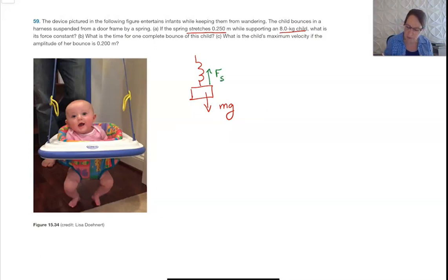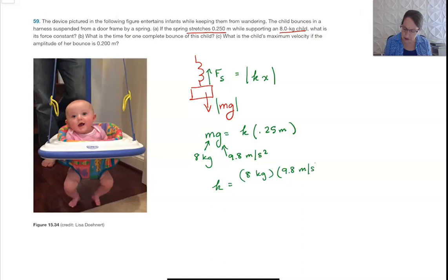So you would say you have kx would be the spring force that would be up and mg would be down. That would be the magnitude of it, and so we could say that mg is equal to k times the displacement. So the displacement from equilibrium, that would be 0.25 meters, and we can find the spring constant of this spring. So the mass is 8 kilograms, g of course is 9.8 meters per second squared, and so we get k is 8 kilograms times 9.8 meters per second squared all over 0.25 meters. The meters cancel and I get 314 kilograms per meter second.